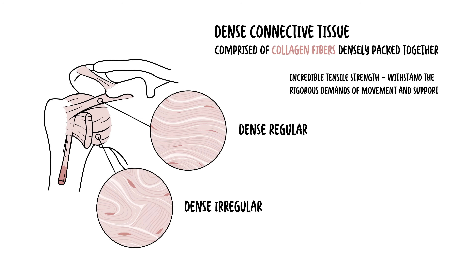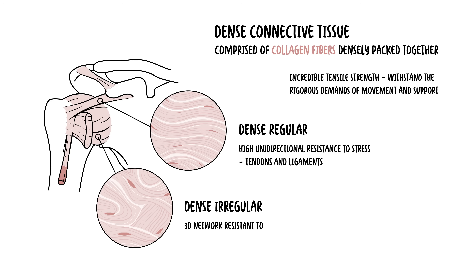Dense regular connective tissue has collagen fibers aligned parallel to each other, providing high unidirectional resistance to stress. The best examples are tendons and ligaments. Dense irregular connective tissue has collagen fibers randomly interwoven, forming a three-dimensional network resistant to distension in all directions. It is usually located in the capsules of joints and walls of organs.